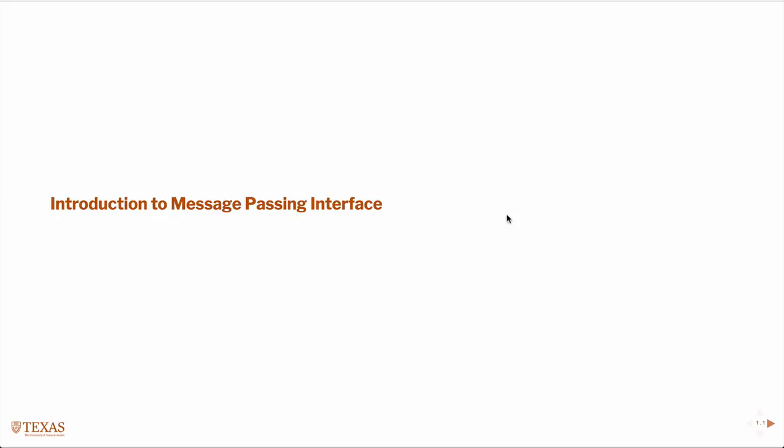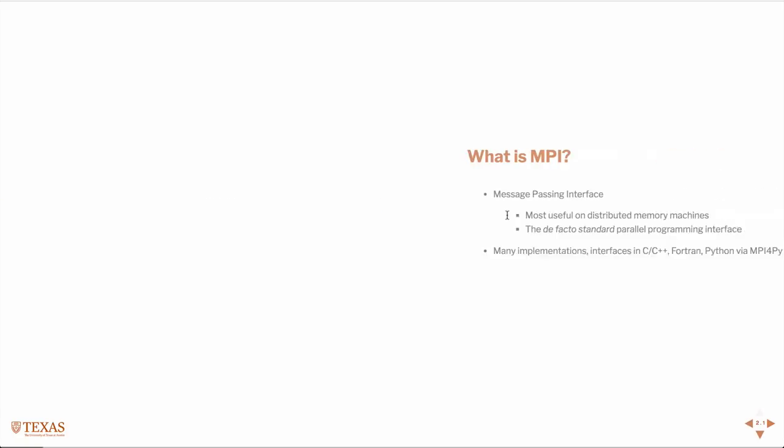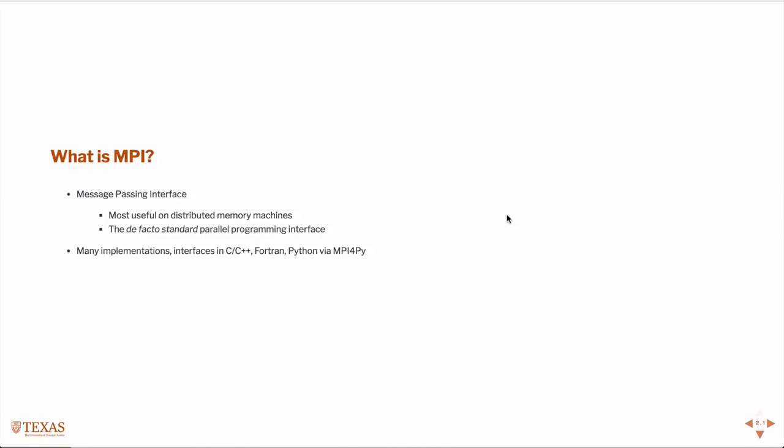In this lecture we're going to talk about message passing interface. This is the de facto standard for distributed memory supercomputing. It's most useful on distributed memory machines. It's the de facto standard because there really aren't meaningful competitors to it out there anymore.